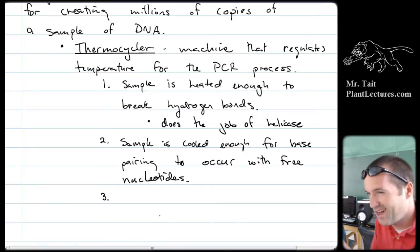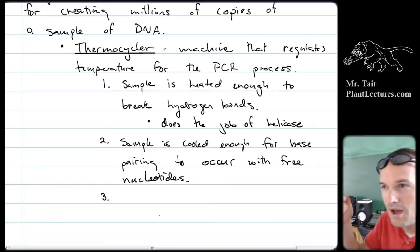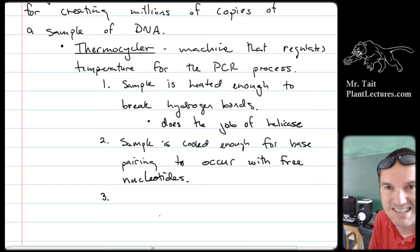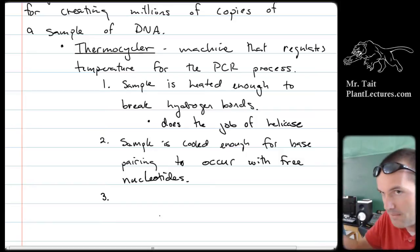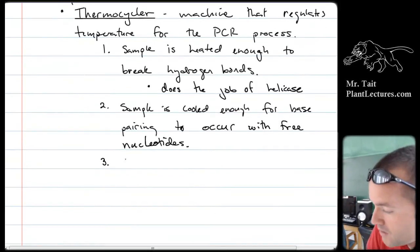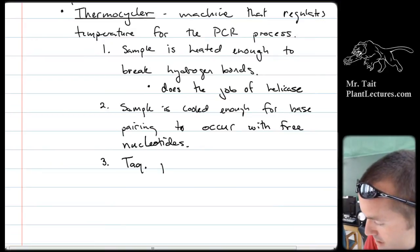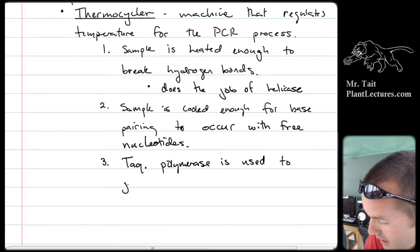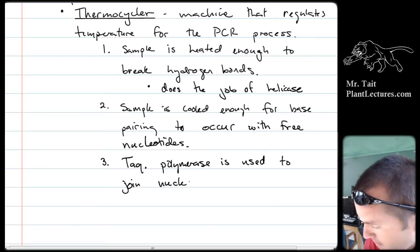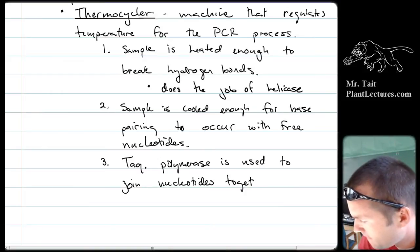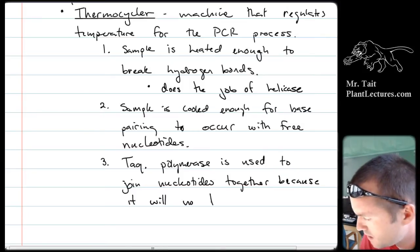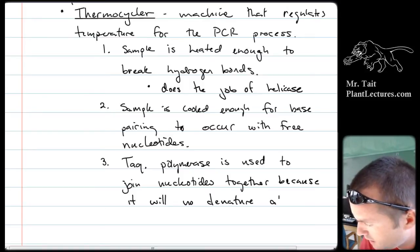The prokaryote is called Thermus aquaticus because it lived in hydrothermal vents. We take that specific DNA polymerase enzyme out of that prokaryote because it's resistant to denaturing at high temperatures. That allows us to make the sugar phosphate backbone. So Taq polymerase is used to join nucleotides together because it will not denature at high temperatures.